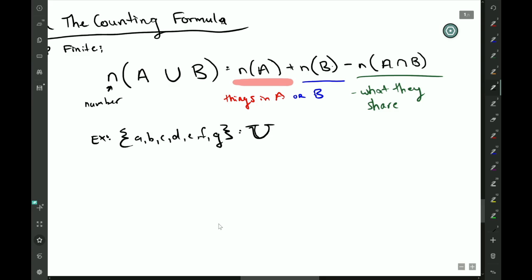Set A are X such that X is a vowel. And we will say B is simply—I'll actually just write—so B are just letters a, b, c. A, b, c, easy as one, two, three.